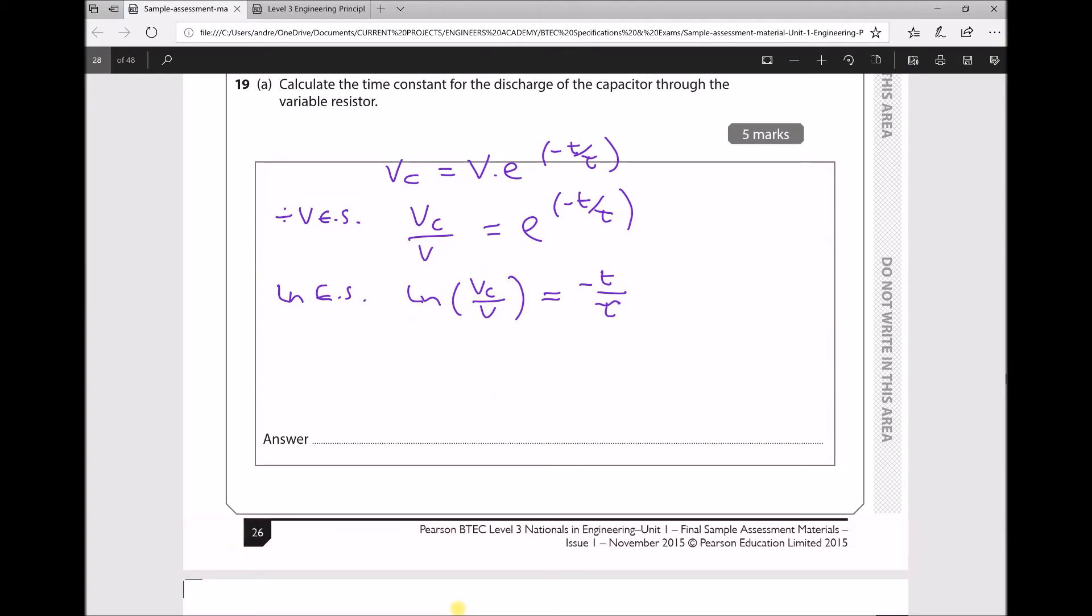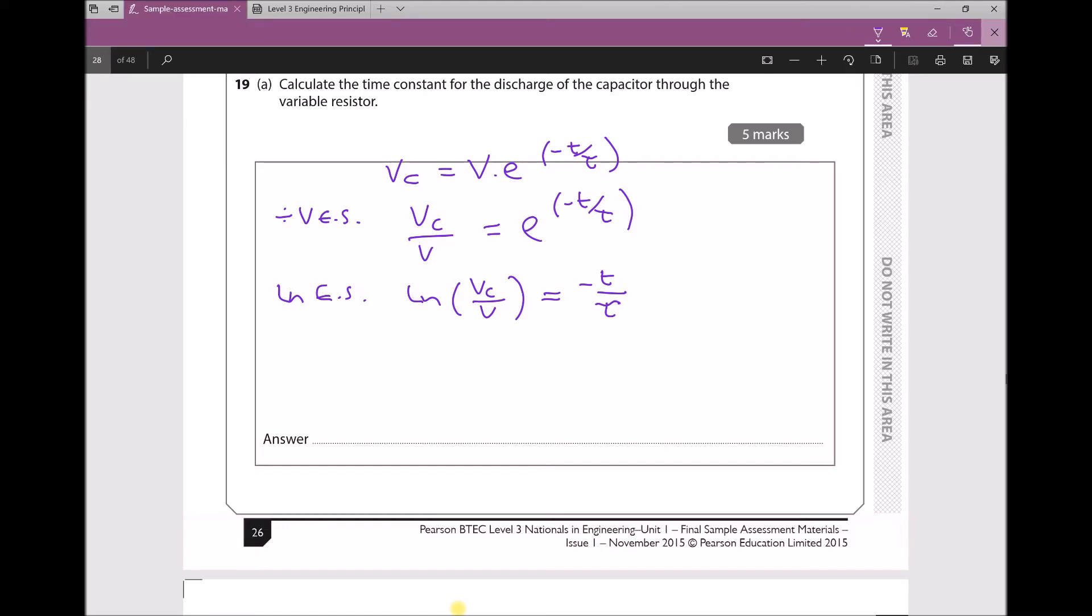That brings us one step closer to getting tau on its own. Now the easiest way to do the next part is in two steps. I'm going to multiply each side by tau, and then divide each side by what we currently have on the left-hand side. The reason I have to do that is because the thing I'm trying to find, tau, is stuck on the bottom of this fraction. We could take reciprocals, but that introduces additional problems. So multiplying each side by tau, I get τ*ln(VC/V) = -T. The final step to get tau on its own is to divide each side by ln(VC/V).